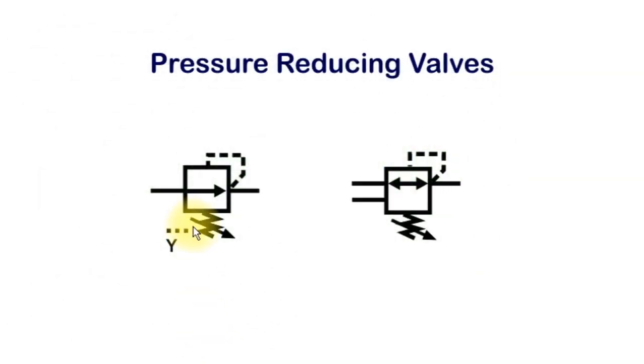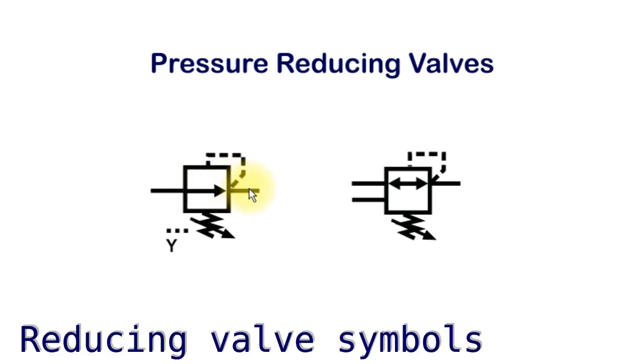This is an introduction to pressure reducing valves as shown by these symbols. Here we've got the input and the output. At startup under normal conditions, the flow goes straight through and you get the same pressure on both sides.